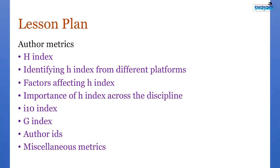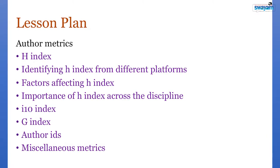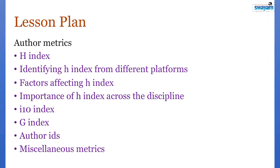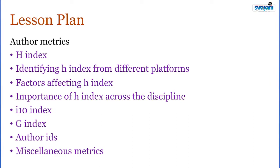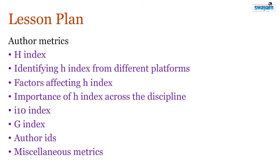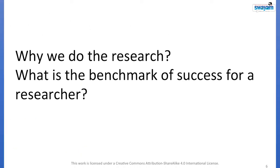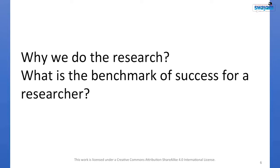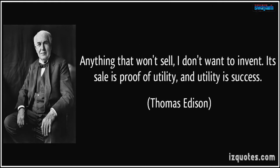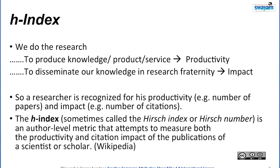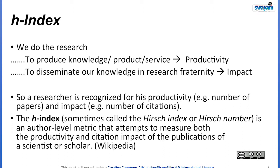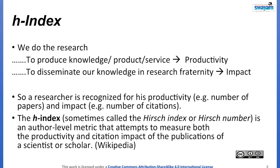Author indices are the things by which you can assess the expertise of a researcher, scientist, or research fellow. Why do we do research? Thomas Edison said: 'Anything that won't sell, I don't want to invent — its sale is proof of utility and utility is success.' We do research to produce knowledge, product or service — that is called productivity — or to disseminate our knowledge in the research fraternity — that is called impact.